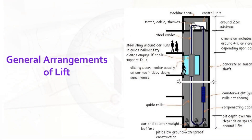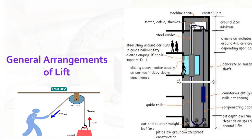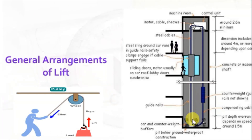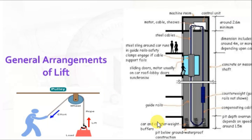Elevators are operated like the pulley system used in the old days to draw water from a well. In a pulley system, we operate manually, but in elevators we use electrical motors to lift the load. The lift car runs through floor to floor along a guide rail, and there is a counterweight. There is also a mechanical system under the lift car that needs buffer space when the lift car reaches the ground floor level.